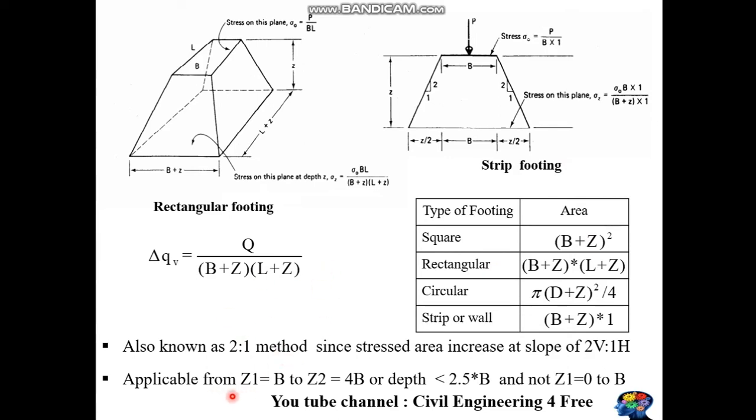It's applicable where stress intensity is required between Z1 = B to Z2 = 4B, or when depth is less than 2.5 times the width of the footing. Note: this method is not applicable for stress distribution between Z1 = 0 to Z2 = B.